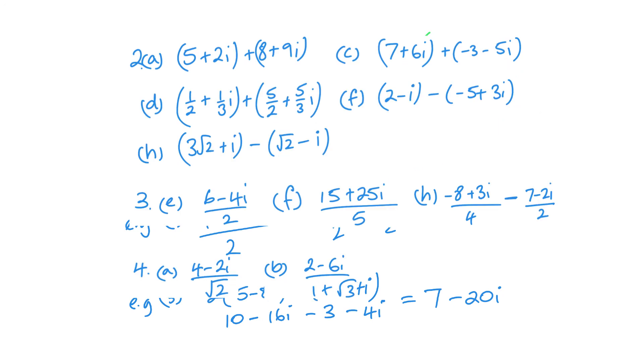Here are a few questions for you to do. It's just simplify them and write them in the form of a plus bi. Question four, just think about the surds and how you would have dealt with them when you were doing your IGCSEs and you should be okay.